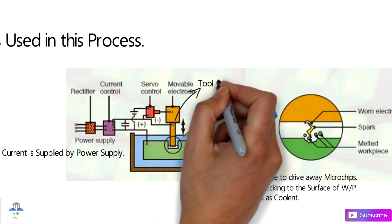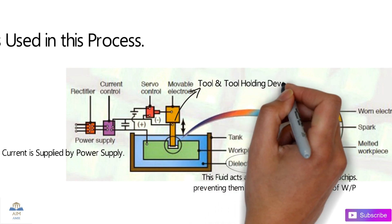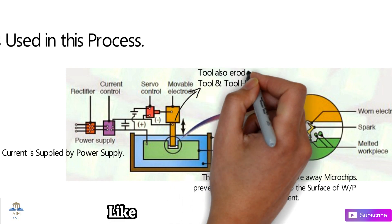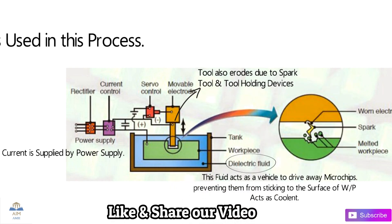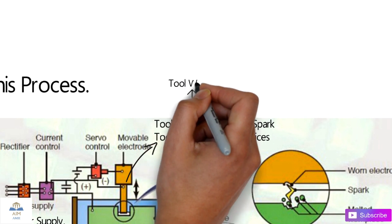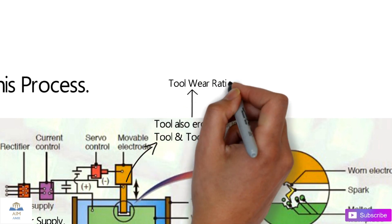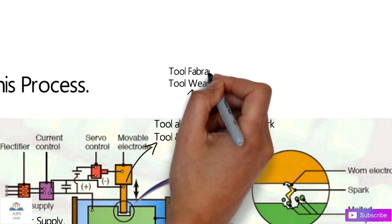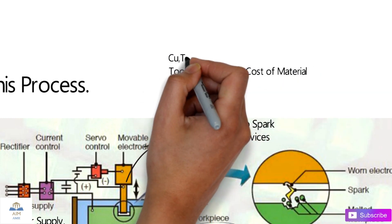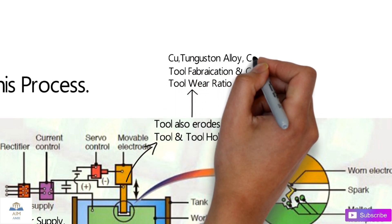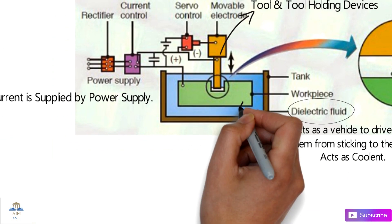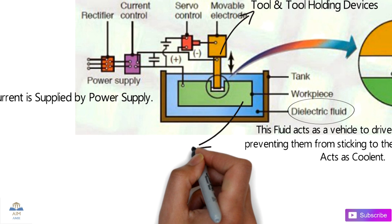The next important equipment is the tool, also called the tool-holding device. The tool also erodes as the workpiece erodes due to the spark. The selection of the tool is very important and is done on the basis of the face wear ratio, fabrication, and cost of material. The main tool materials are copper, tungsten alloy, steel, cast iron, stainless steel, and graphite.